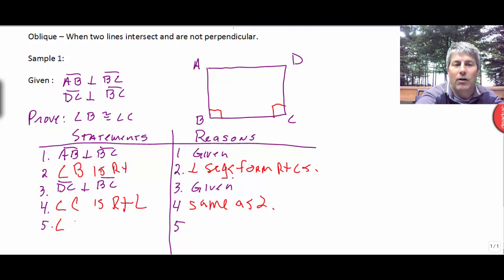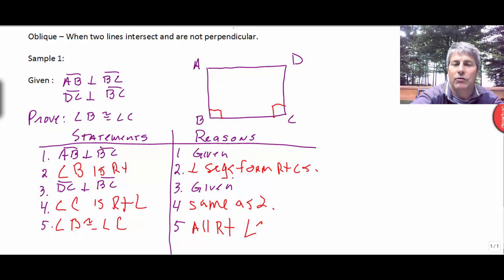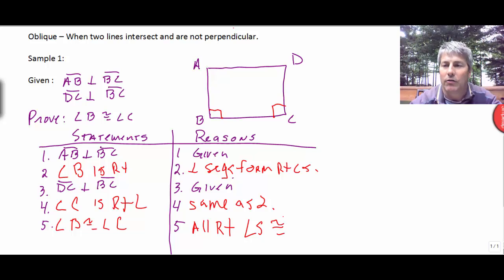all right angles are congruent. Angle B is congruent to angle C. And if two angles are right, then they are congruent. I'll let you go ahead and shorten that to all right angles are congruent.